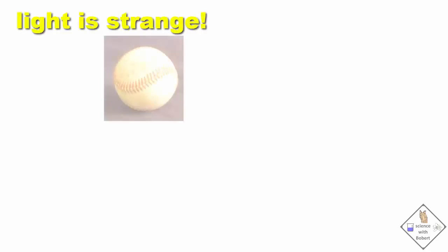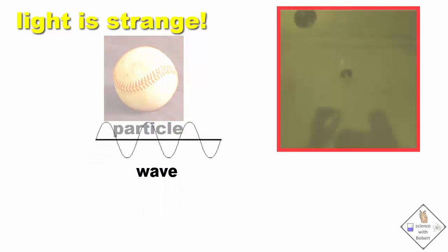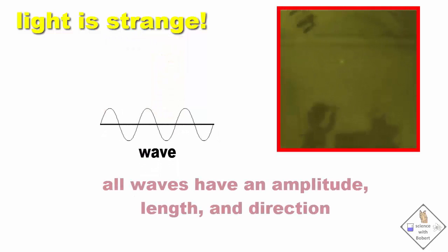Light is strange. It can act like a particle or a wave. In order to build a cell phone signal blocker, it will be most beneficial to focus on the wave properties of light.